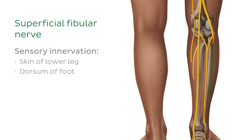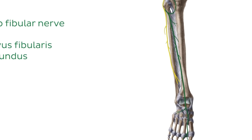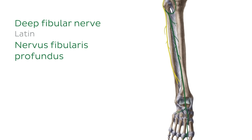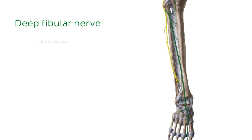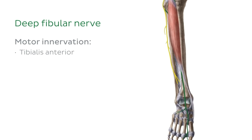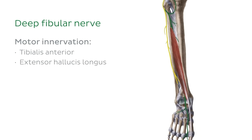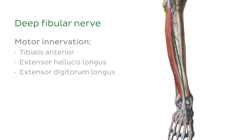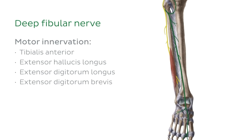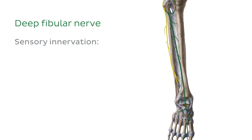The next branch is the deep fibular nerve, a terminal branch of the common fibular nerve, which runs along the anterior aspect of the leg. This nerve provides motor innervation to muscles of the anterior compartment of the leg, including the tibialis anterior muscle, the extensor hallucis longus, the extensor digitorum longus, the extensor digitorum brevis, and fibularis tertius. It also provides a small area of sensory innervation to the dorsum of the foot between the first and second toes.